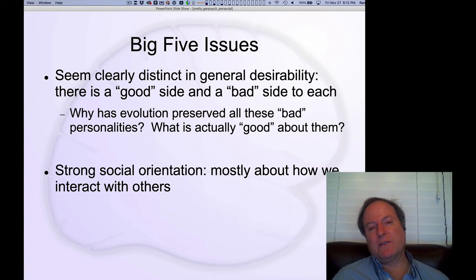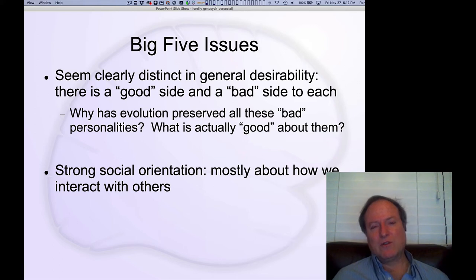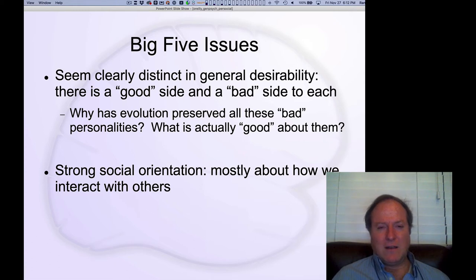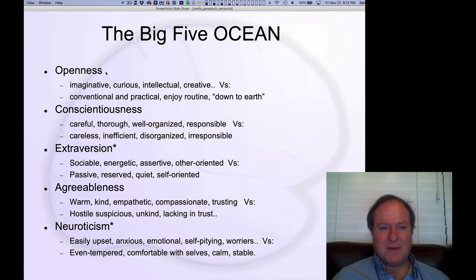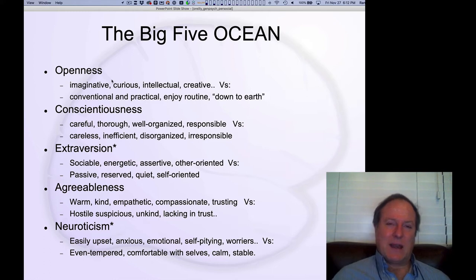Interesting features of the Big Five personality dimensions: one is that there seems to be a difference in overall social desirability for different facets. There seem to be a good versus a bad side in general to each dimension. Openness is debatable — as somebody who's higher in overall openness, I tend to think of the more curious, intellectually open aspect as being more positive.